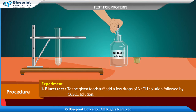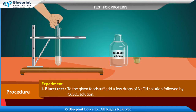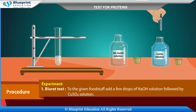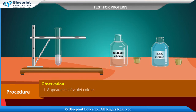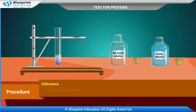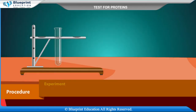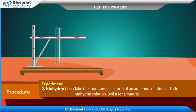Experiment 1 — Biuret Test: To the given foodstuff, add a few drops of NaOH solution followed by CuSO4 solution. Observation: Appearance of violet color. Inference: Protein confirmed.